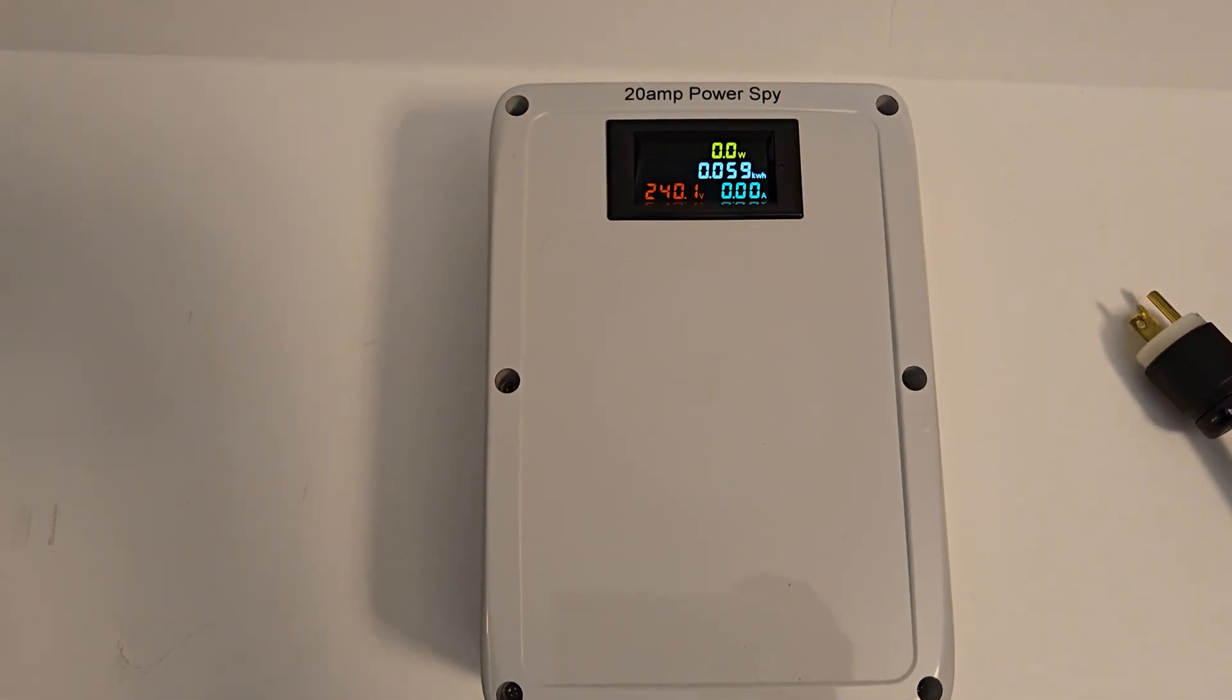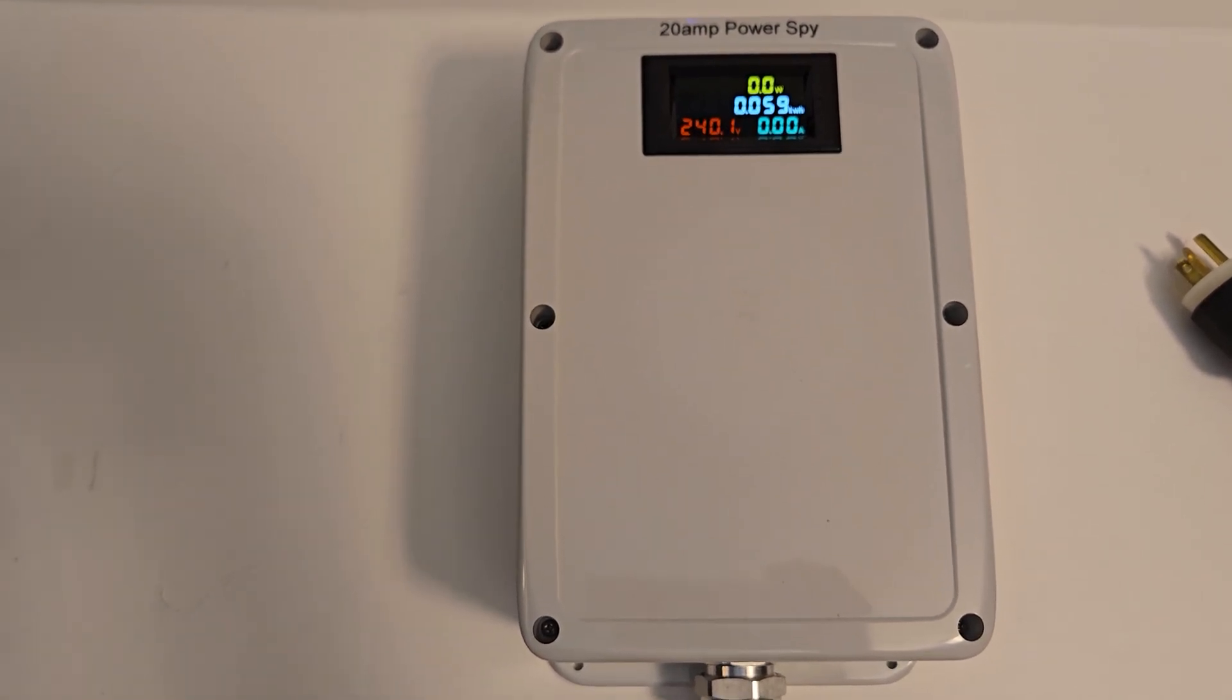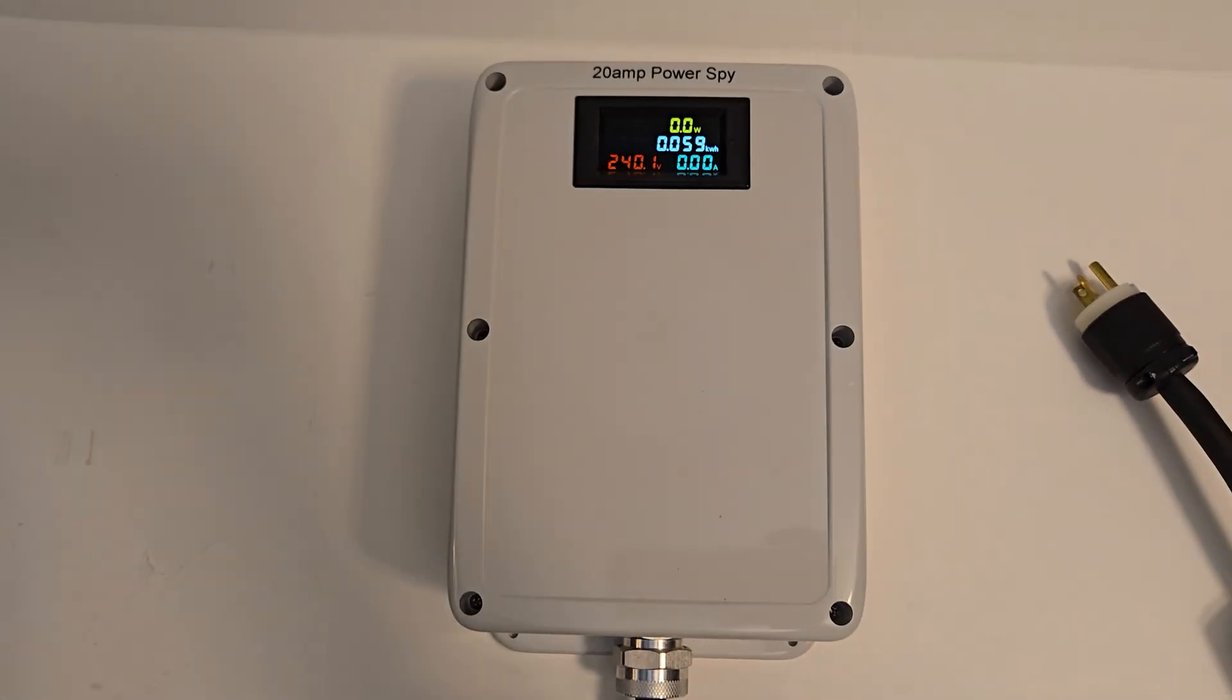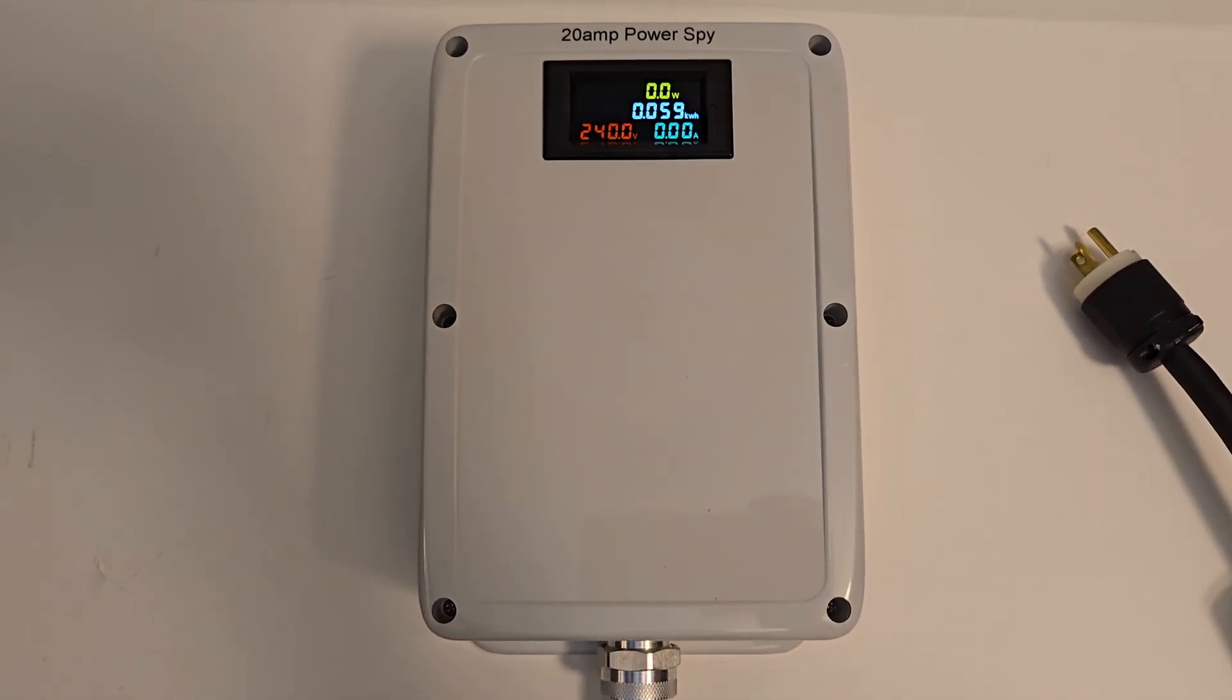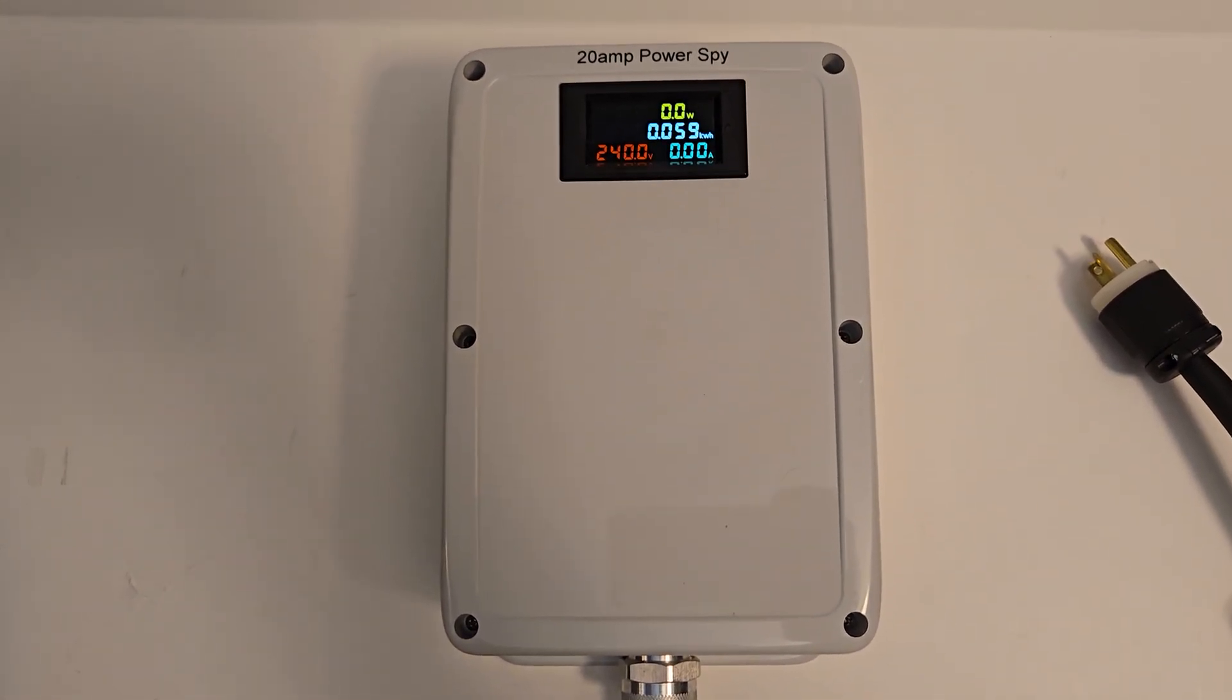This unit will help you keep an eye on the voltage, amperage, wattage, and even the accumulated kilowatt hours for whatever device you plug in. These can be used to monitor power and keep track of how much energy is being used for a shared parking spot, for example.